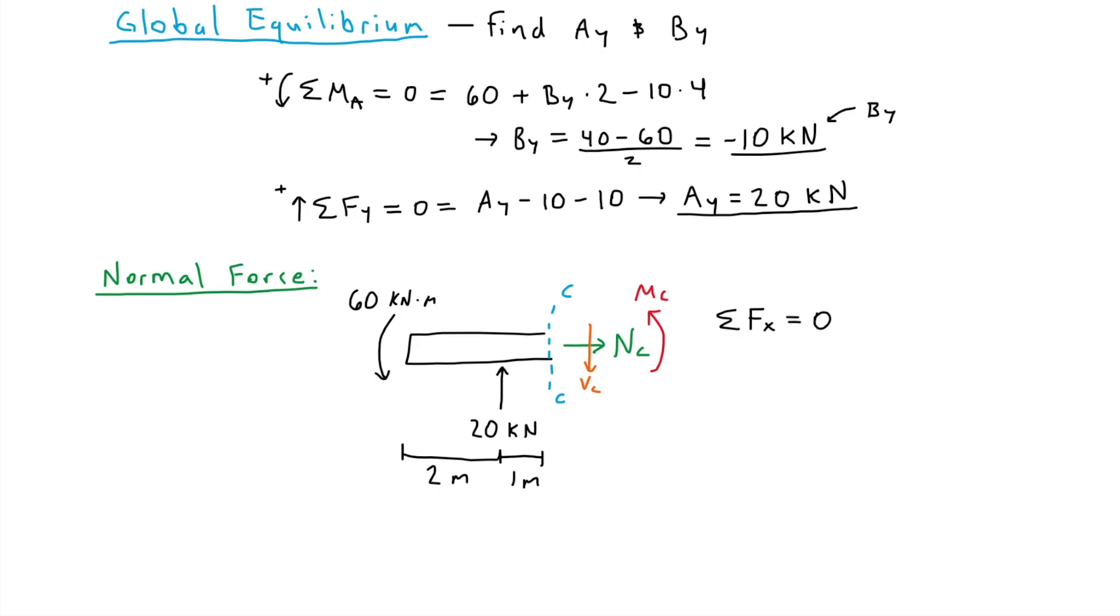The only force we have here is Nc, which acts to the right, which is positive, considering the X, Y coordinate. Like I mentioned previously, in this problem, we don't have any applied forces acting in the X direction. So simply, the normal force at point C equals 0. There is essentially no normal force created by the external forces.